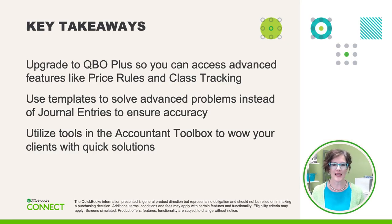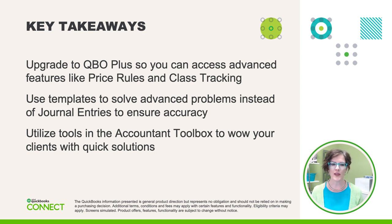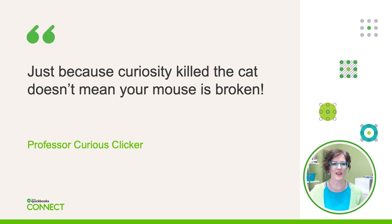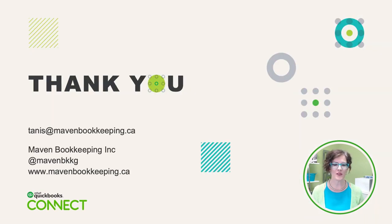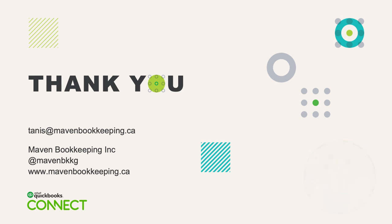Now let me leave you with three key takeaways. First, consider upgrading to QuickBooks Online Plus so you can access some of the advanced features we demonstrated, like price rules and class tracking. Second, consider using the templates to solve some of your advanced problems instead of using journal entries. And lastly, don't forget to check out the tools available in the Accountant Toolbox — there are great solutions there. And most importantly, just because curiosity killed the cat doesn't mean your mouse is broken. Don't forget to be a curious clicker. Thank you for your attention while we tackled these five client conundrums. I hope you've discovered a few new ways to tackle some of your own conundrums. We'll see you next time.